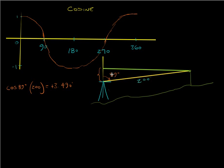If I change this angle toward 90 by just 20 seconds — so now I have the cosine of 89 degrees 0 minutes 20 seconds, multiplied by 200 — I get plus 3.471. So it changed about 2 hundredths of a foot just by changing the angle 20 seconds.